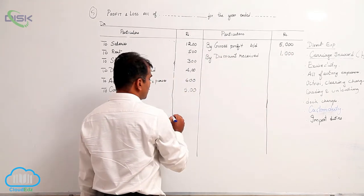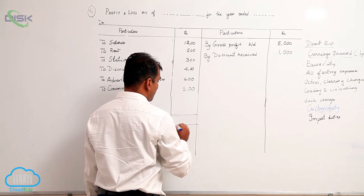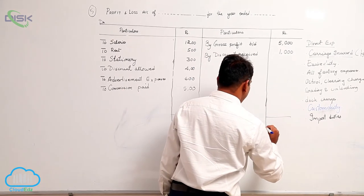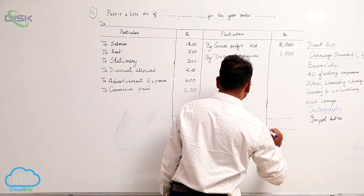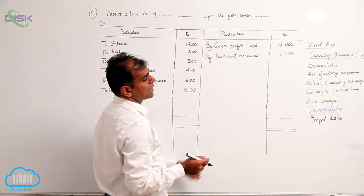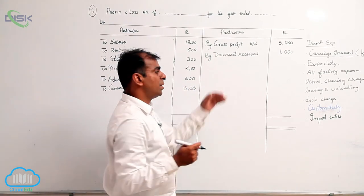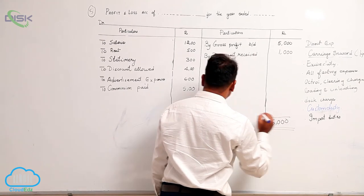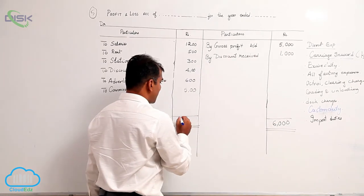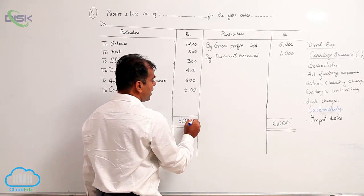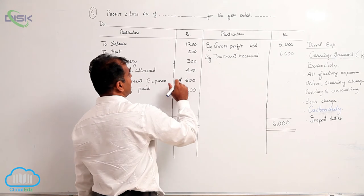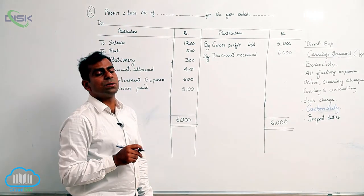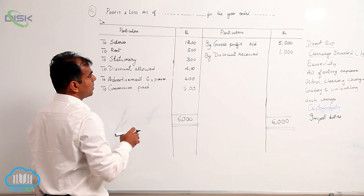That's all. Let us close the P&L account by balancing it. The total on the credit side looks more, so I'm taking six thousand as the total on the credit side and deducting all the items on the debit side to get the net profit.